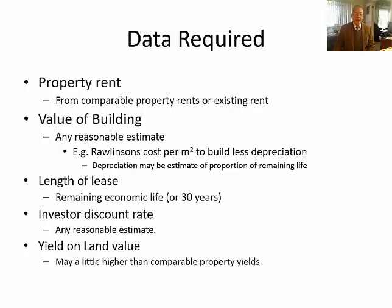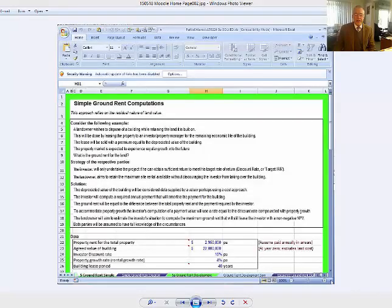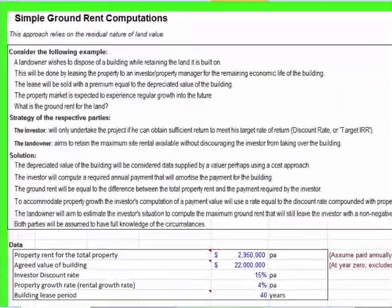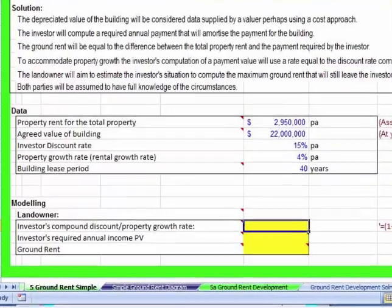Here we have the fifth exercise in the module 3 self-correcting exercise — simple ground rent. If you read through the description, you'll find a situation not unlike what I'm asking you to do in the assignment. It's a little bit different, but the mathematics is the same. When we look at what's required in this model, there are only three equations you need to do — a fairly simple model. However, I don't want you to simply take this model and paste it into your report. I'd like you to build your own model so it looks a bit different, even though the mathematics should be the same.